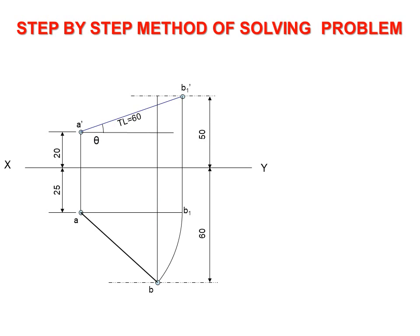From b draw a vertical projector to get b' at the locus of b'. Join a' and b' to get the front view a'b' of the line.